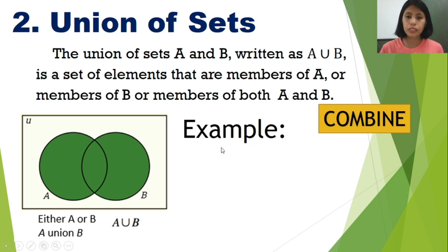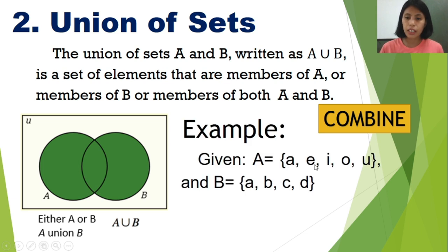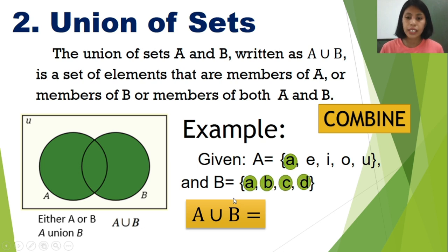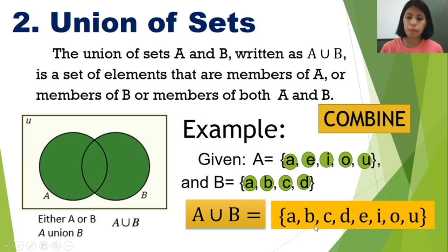Let's have an example. Set A has elements A, E, I, O, U and set B has elements A, B, C, D. We need to combine the elements of A and B. Since we have the common element A appearing in both sets, and in writing a set we write each element only once, our union of sets is {A, B, C, D, E, I, O, U}. Remember, for union of sets we need to combine.